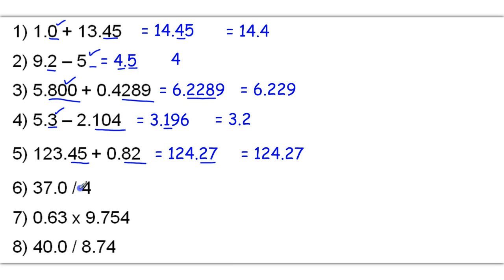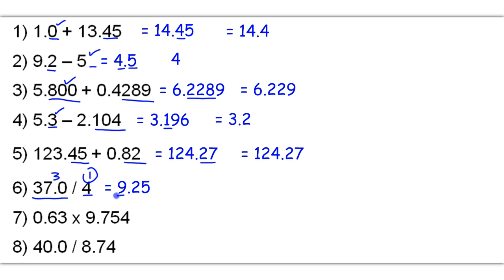Now we're going to divide, which is a different rule. 37.0 divided by 4 will get me a raw answer of 9.25. But now we apply the rule based on the least number of sig figs. This number has 3 sig figs, this number has only 1 sig fig, so I'm going to go with 1 sig fig. My answer is going to round off at the 9, and so 9 rounded off by the .2 gives me just 9 as the final answer.